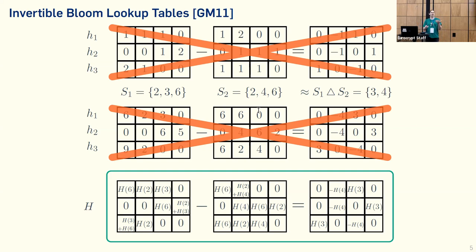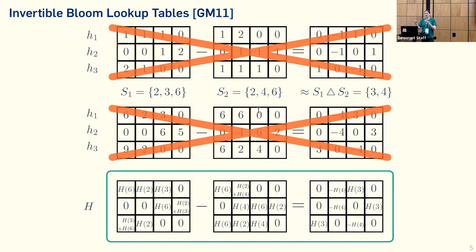That works as long as the symmetric set difference is small enough. From that we can easily construct a property-preserving hash function, simply by using the encoding function as our hash function. During evaluation, we do the subtraction and then the decoding. We check if it fails — it fails exactly when we have no entry corresponding to an actual hash value, and that only happens if the symmetric set difference is too large, or with negligible probability.